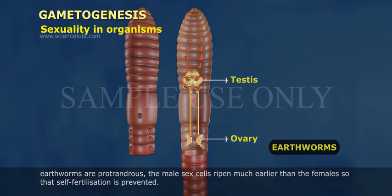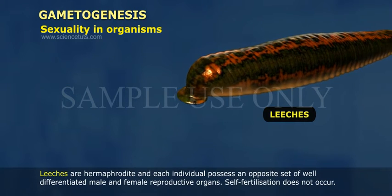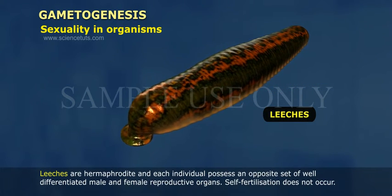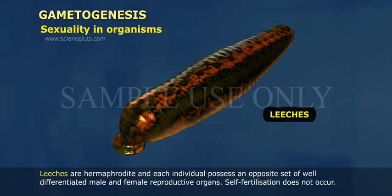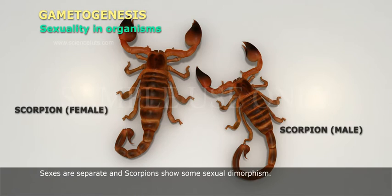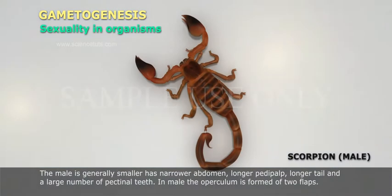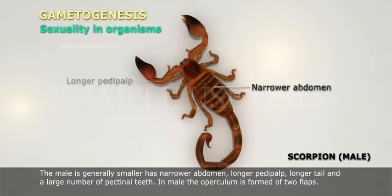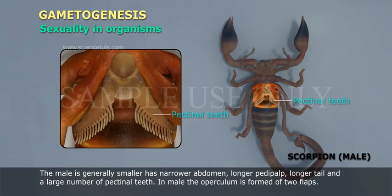Leeches are hermaphrodite and each individual possesses an opposite set of well-differentiated male and female reproductive organs. Self-fertilization does not occur. Cross-fertilization preceded by copulation is effected. Sexes are separate and scorpions show some sexual dimorphism. The male is generally smaller, has narrower abdomen, longer pedipalps, longer tail and a large number of pectinal teeth.